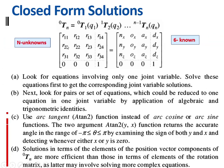If we have n links, we have n unknowns. The 3×3 rotation part consists of n vectors, and the displacement column can be variable for prismatic joints. In total we have twelve equations — three rows and four columns, since the last row is constant. Using these twelve equations and six known quantities, we solve for n unknowns. For a solution to exist, n must be greater than or equal to six.